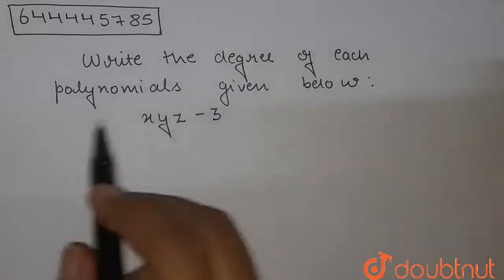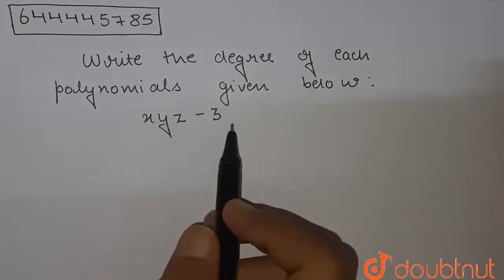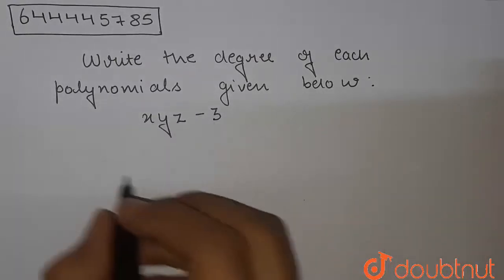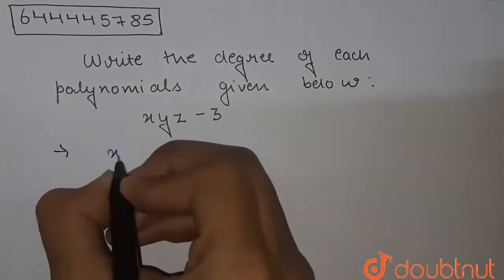Okay, so the polynomial given to us is xyz minus 3.